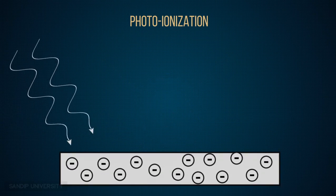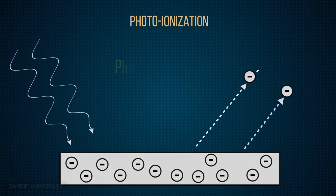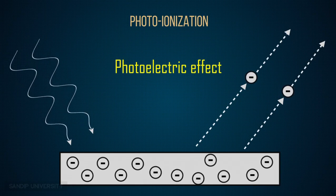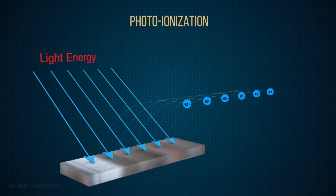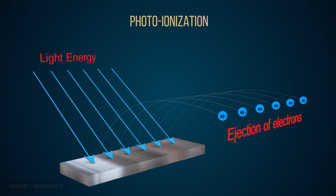The simplest example of this process can be seen in the photoelectric effect, which occurs when light shines on a piece of metal causing the ejection of electrons. That is all about photo-ionization.